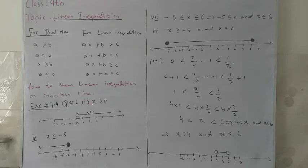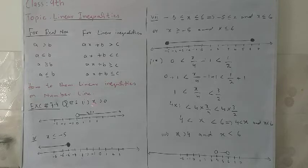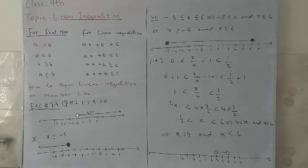Question number 1, part 1: we have x is greater than 0. How to show on the number line? X greater than 0 means all real numbers which are positive, which will lie on the right hand side of 0. Here we will use a small hollow circle to show this number, meaning 0 is not included on this line.